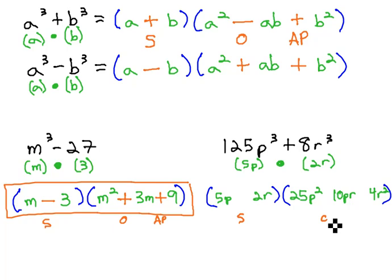All that's left is filling in the signs, as I think about soap. S stands for same sign as the problem, or plus. O is the opposite sign of the problem, or minus, and AP is always plus. And we've now factored our polynomial to 5p plus 2r times 25p squared minus 10pr plus 4r squared.